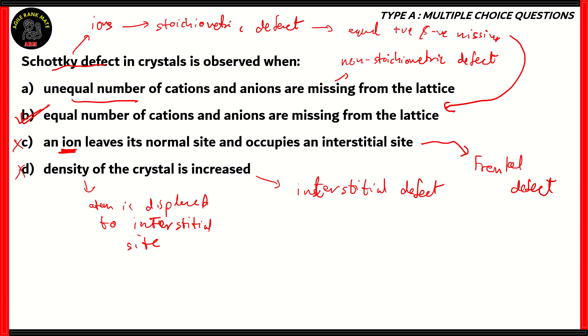So the correct option for this question is option B, equal number of cations and anions are missing. That's why it's called a Schottky defect, because it pertains to ionic solids and it's a stoichiometric defect. That means equal numbers of cations and anions are missing.